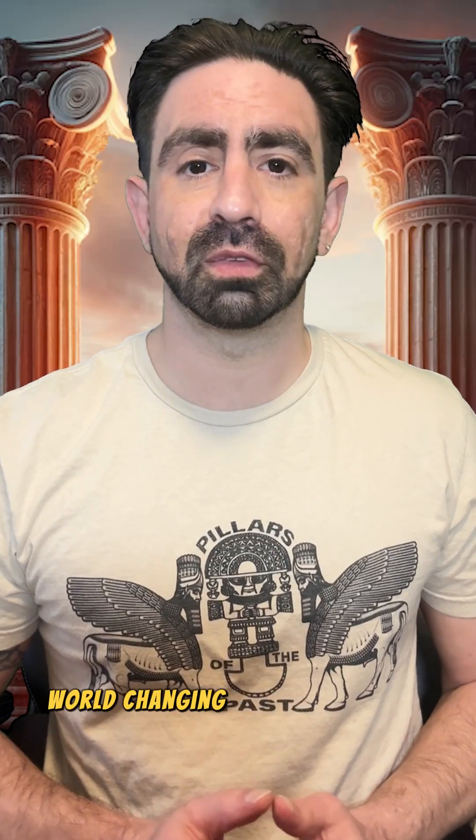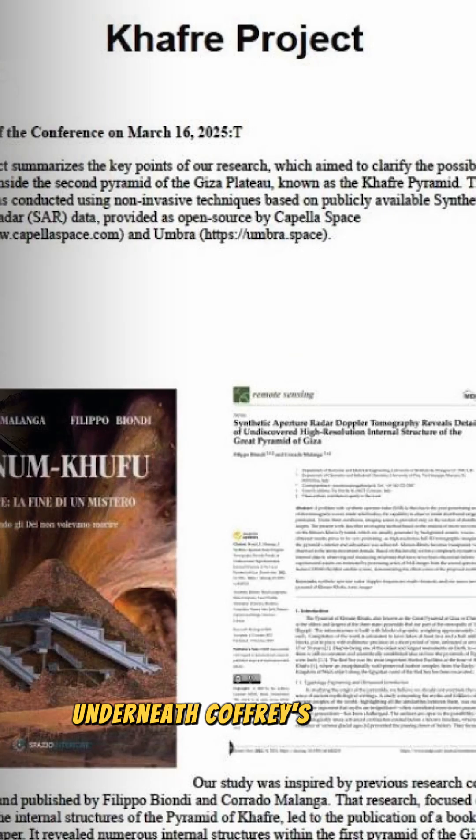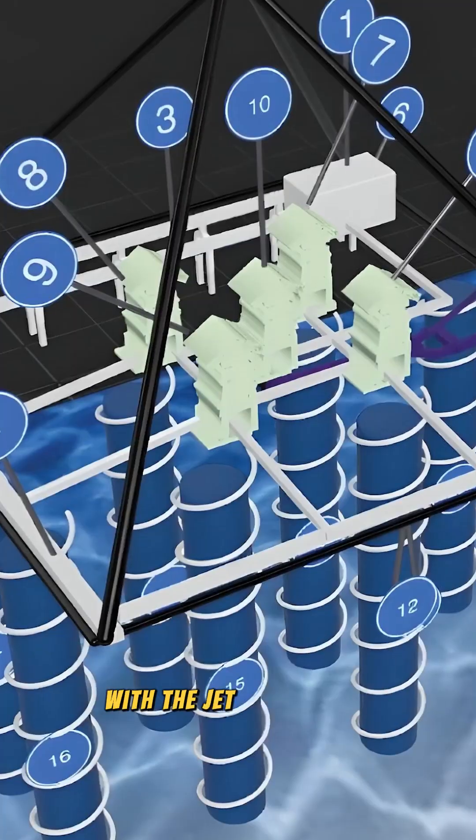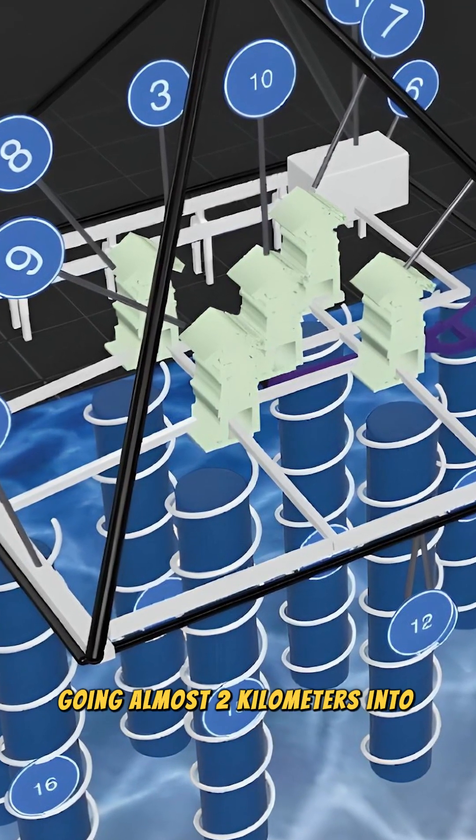There's potential world-changing research from an Italian team who used SAR imaging to detect massive structures underneath Khafre's Pyramid on the Giza Plateau. We're talking potential chambers with djed pillars and subsurface structures going almost two kilometers into the Earth.